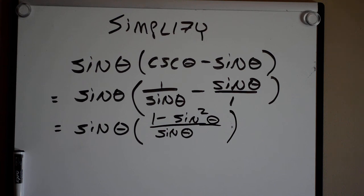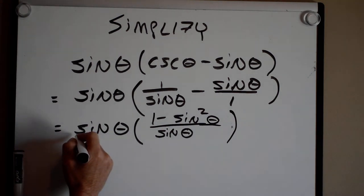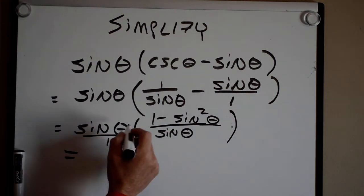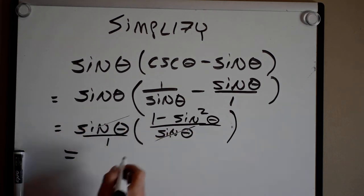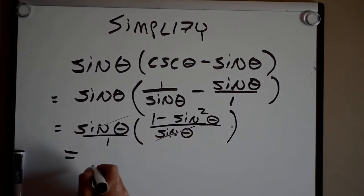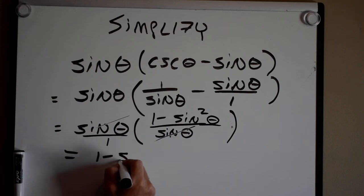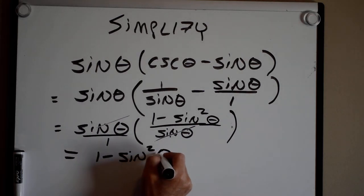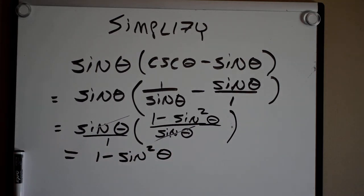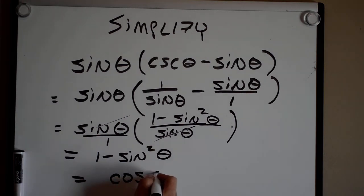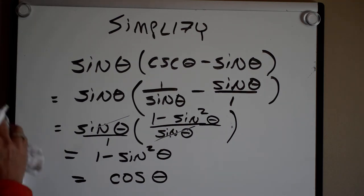So, over here, remember, if I put this guy over 1, we can see very easily that that cancels with that. And I'm left with 1 minus the sine squared theta, which we recall from our Pythagorean identities, this is the same as the cosine of theta. So there, I have simplified it as much as I can. Bravo.